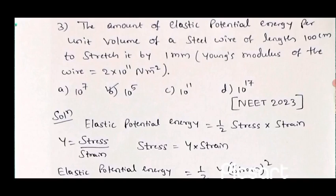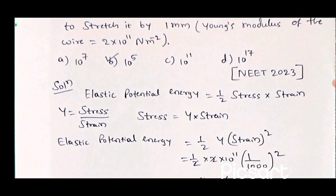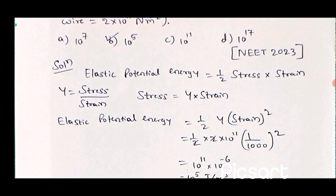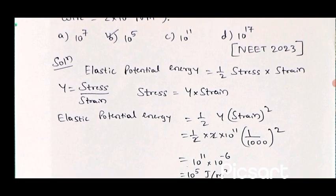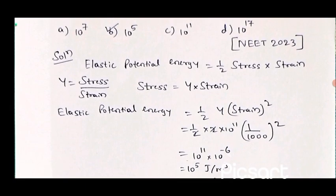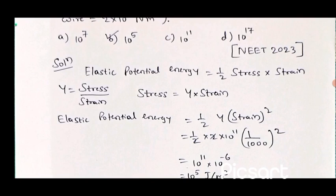The wire length is 100 cm and it is stretched by 1 mm. The strain is the change in length 1 mm divided by 100 cm, which we convert to meters: 1 mm is 1/1000 m and 100 cm is 1 m, so strain equals 1 by 1000, i.e., 10 to the power minus 3. Squaring the strain gives 10 to the power minus 6. The 2 in the formula cancels with the half. Remaining: 10 to the power 11 into 10 to the power minus 6 equals 10 to the power 5. The correct answer is option B: 10 to the power 5.